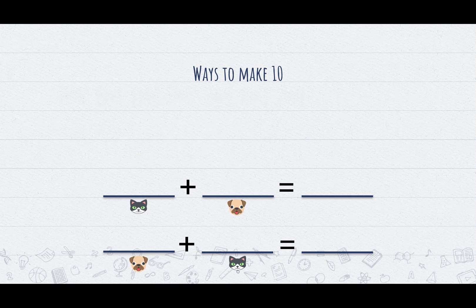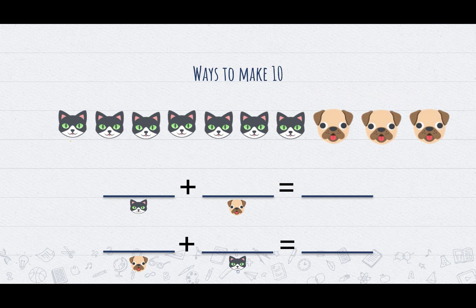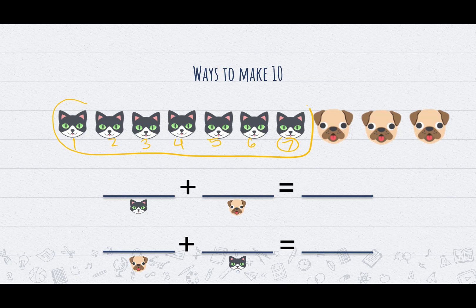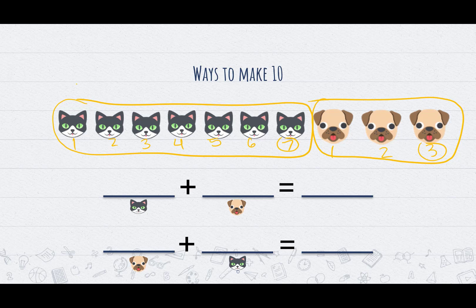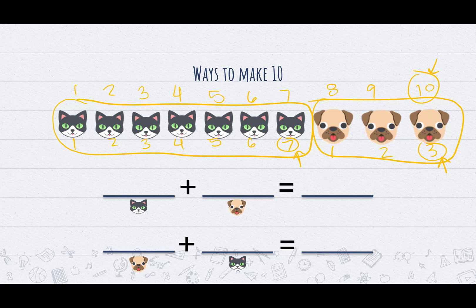Let's look at our next way. I'm going to count my cats first this time: 1, 2, 3, 4, 5, 6, 7 cats. Then counting the dogs: 1, 2, 3, and continuing to 10 all together. Our new way of making 10 is a group of 7 plus a group of 3 — together they make 10. So 7 cats plus 3 dogs equals 10, and 3 dogs plus 7 cats equals 10. A group of 7 and a group of 3 put together makes 10.